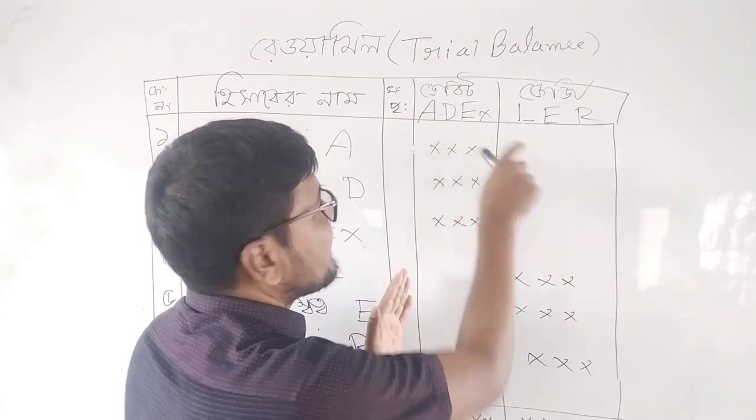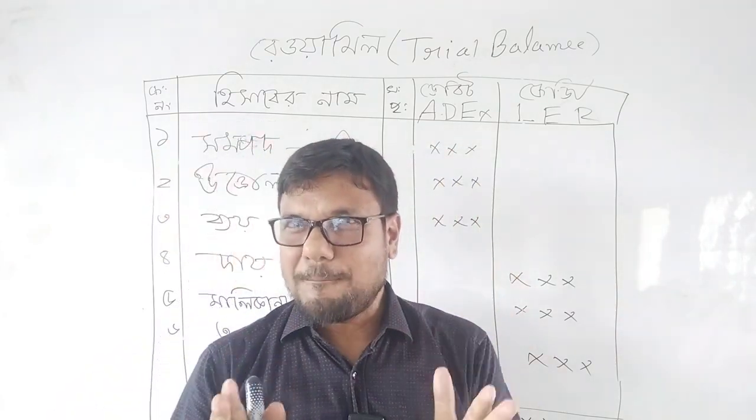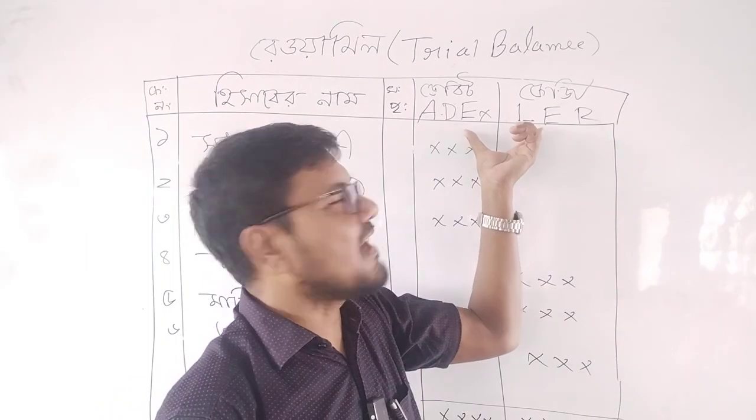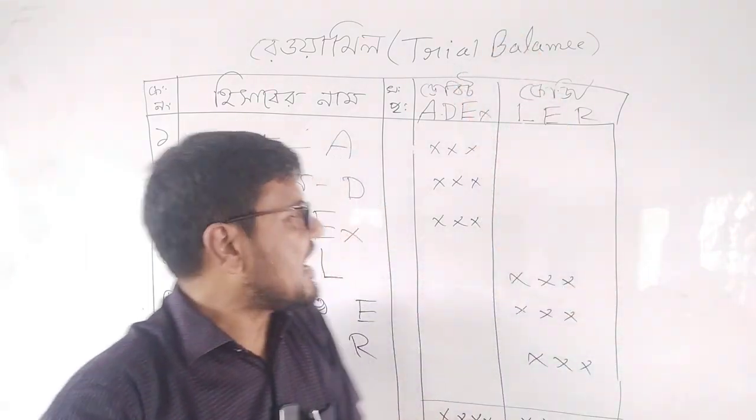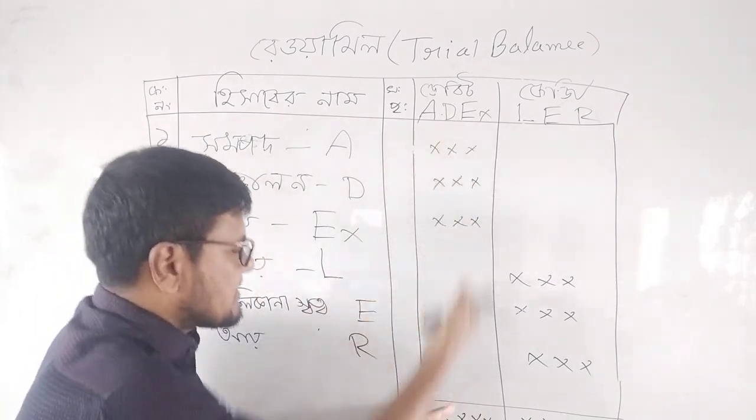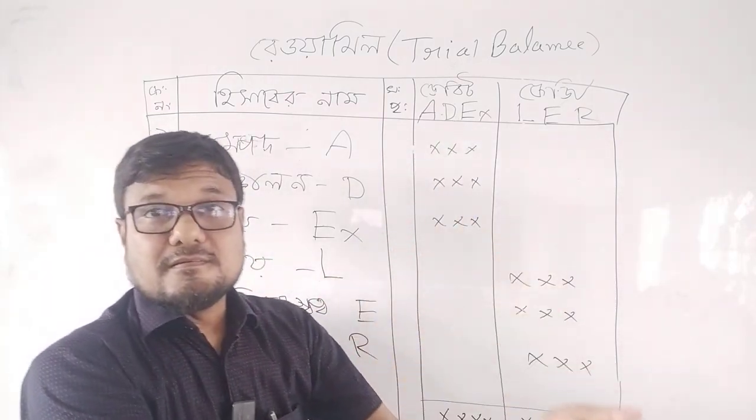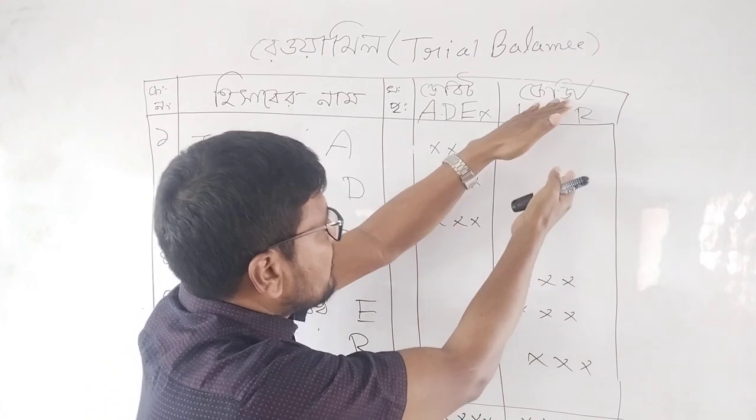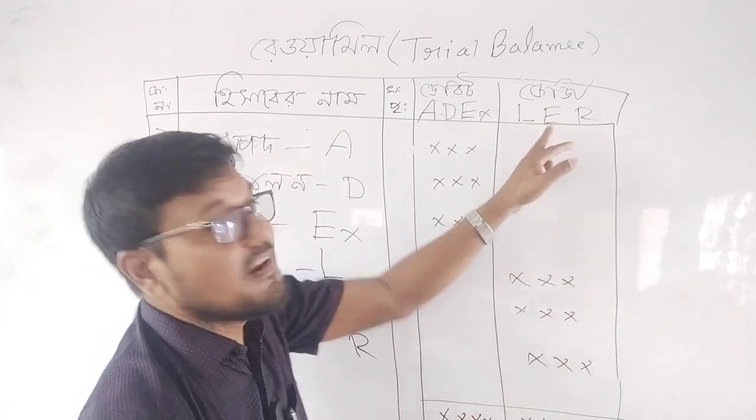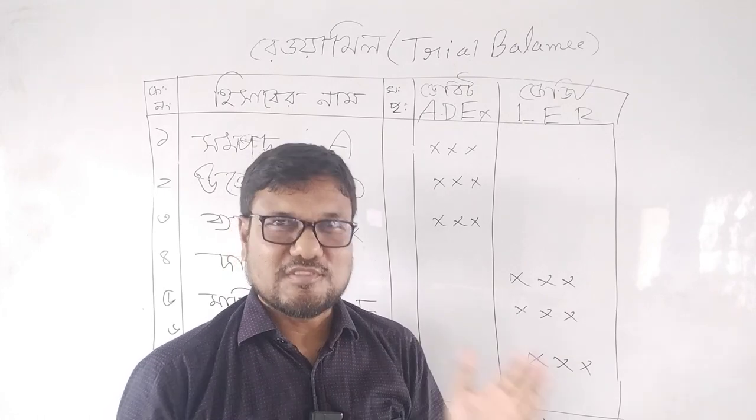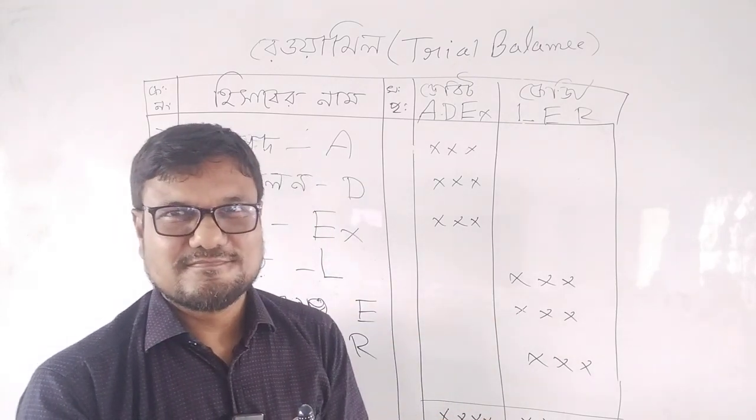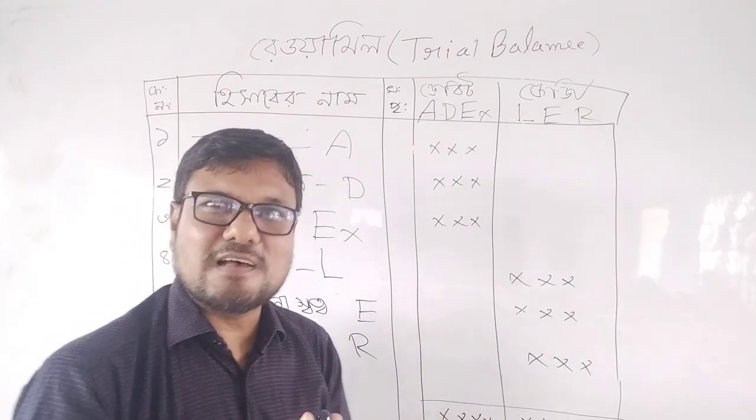These are the EDEXLER laws, so please remember this EDEXLER law to prepare a trial balance. At last, the trial balance debit side will be the same amount, equal to the trial balance credit side. That is the EDEXLER law. Thanks for watching this video.